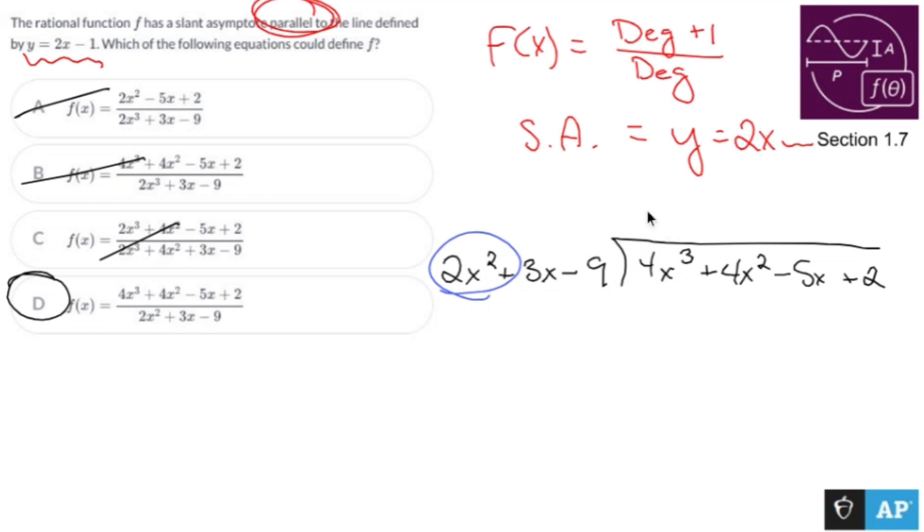Well, 2 times 2 is 4, and x times x squared is x cubed. And then usually you do the whole thing, and you subtract, and you do the whole thing. But in this case, I can be done because my slant asymptote is going to be y equals 2x blah, blah, blah,